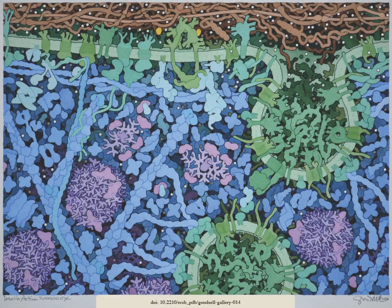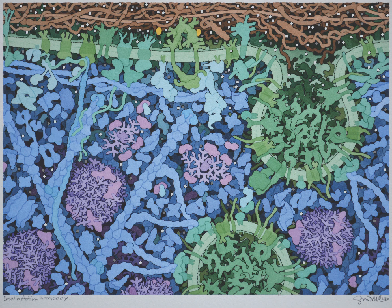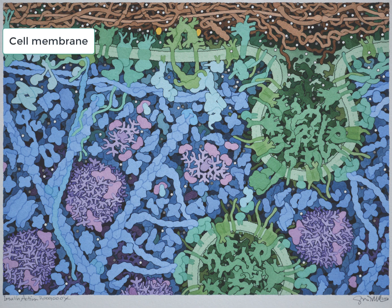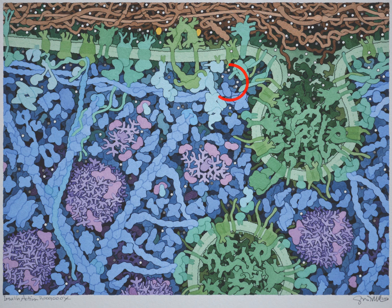In this painting by David Goodsell, you are looking at the boundary of a cell. The blue and purple bits are the inside of the cell and the brown part is the outside of the cell. The green cell membrane separates the outside from the inside. The focus in this video is to understand how glucose molecules, shown as white specks, enter into the cells.